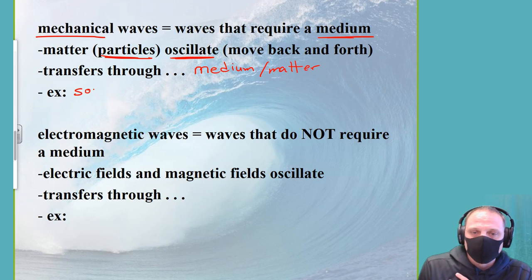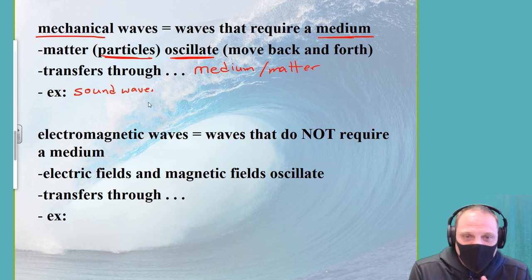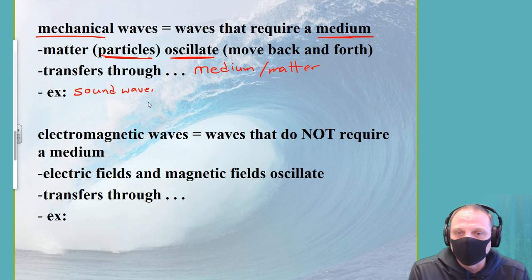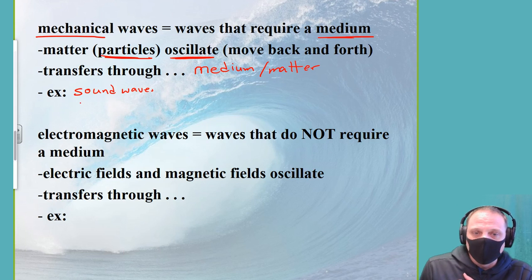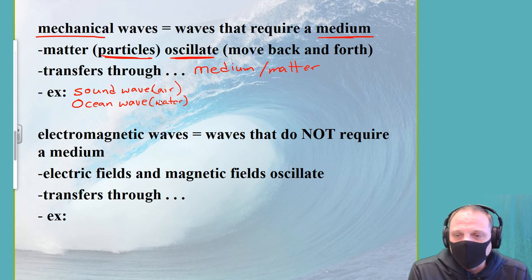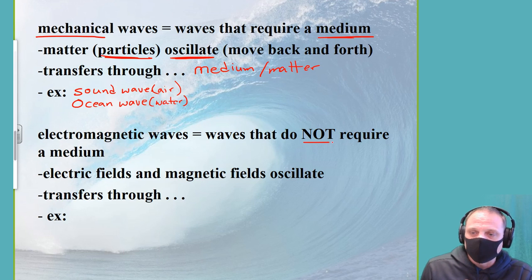An example of a mechanical wave is a sound wave. If you've ever heard a sound, you've heard a mechanical wave — and the only way you can hear it is through the air particles around your ears and around the object making the sound. Sound waves require a medium to move through. Similarly, ocean waves require a medium — the medium for an ocean wave is water, and for a sound wave it's air.